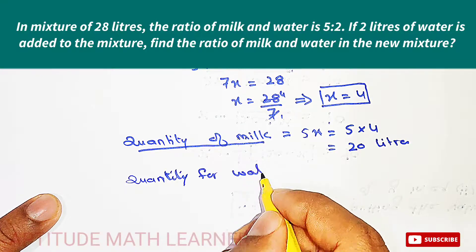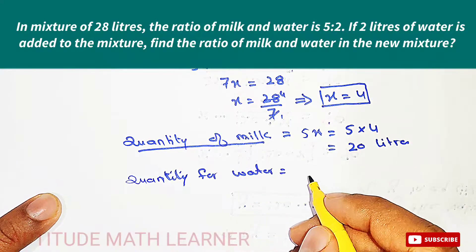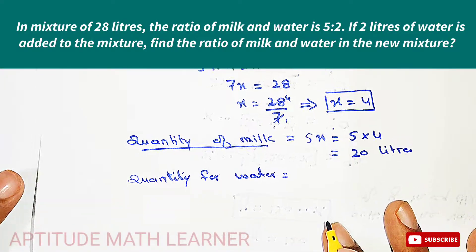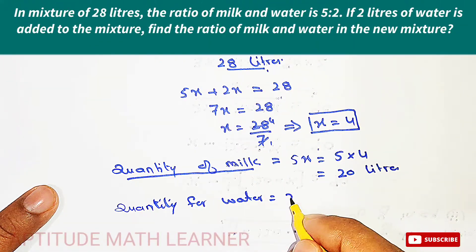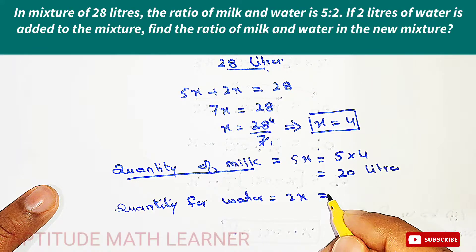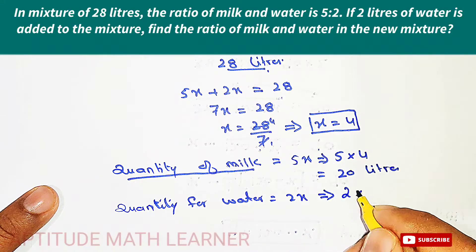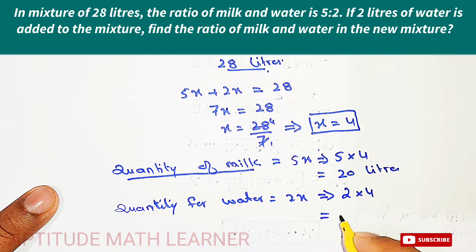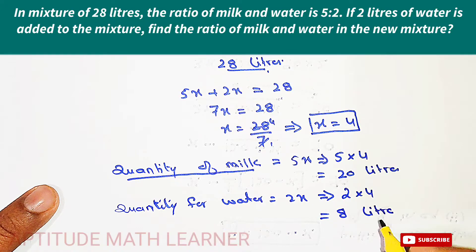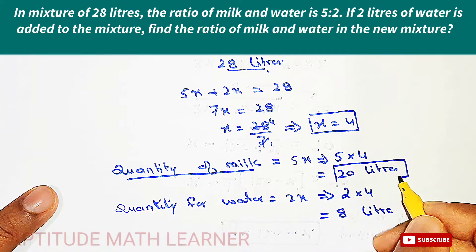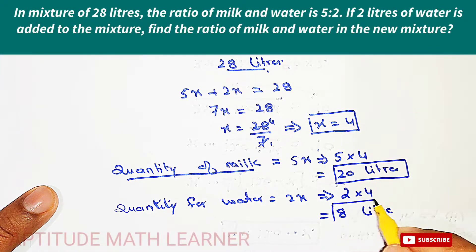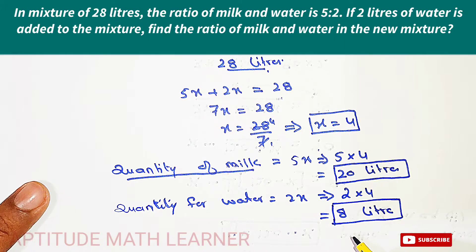Next, we find the quantity of water in the present mixture. Water is in the ratio 2x, so 2x equals 2 multiplied by 4, which gives us 8 liters. So in the present mixture, milk is 20 liters and water is 8 liters.